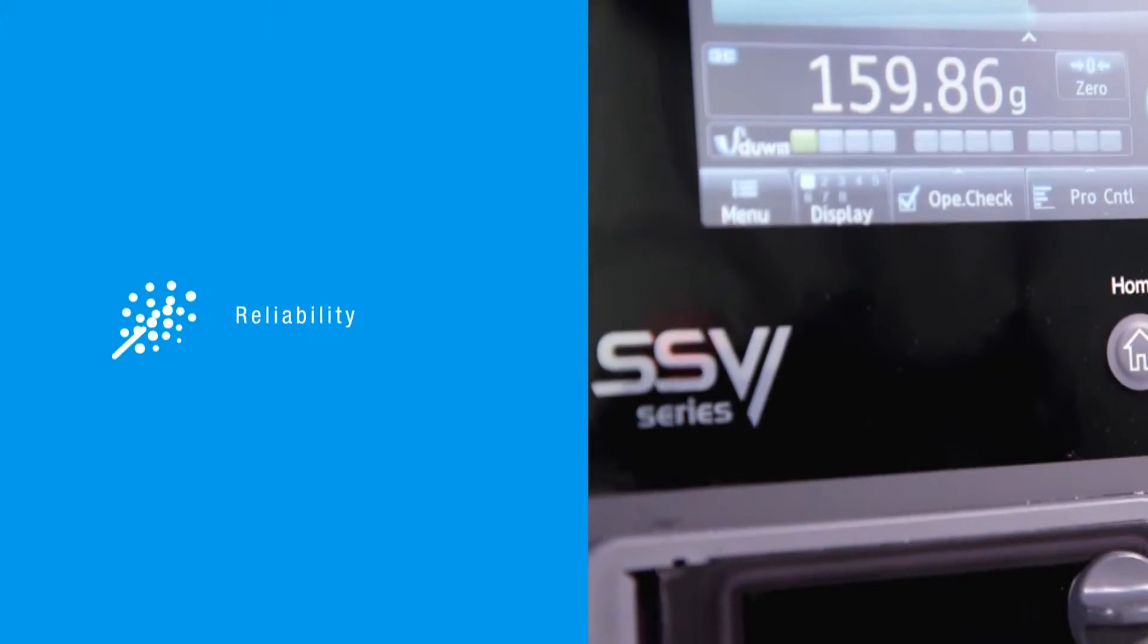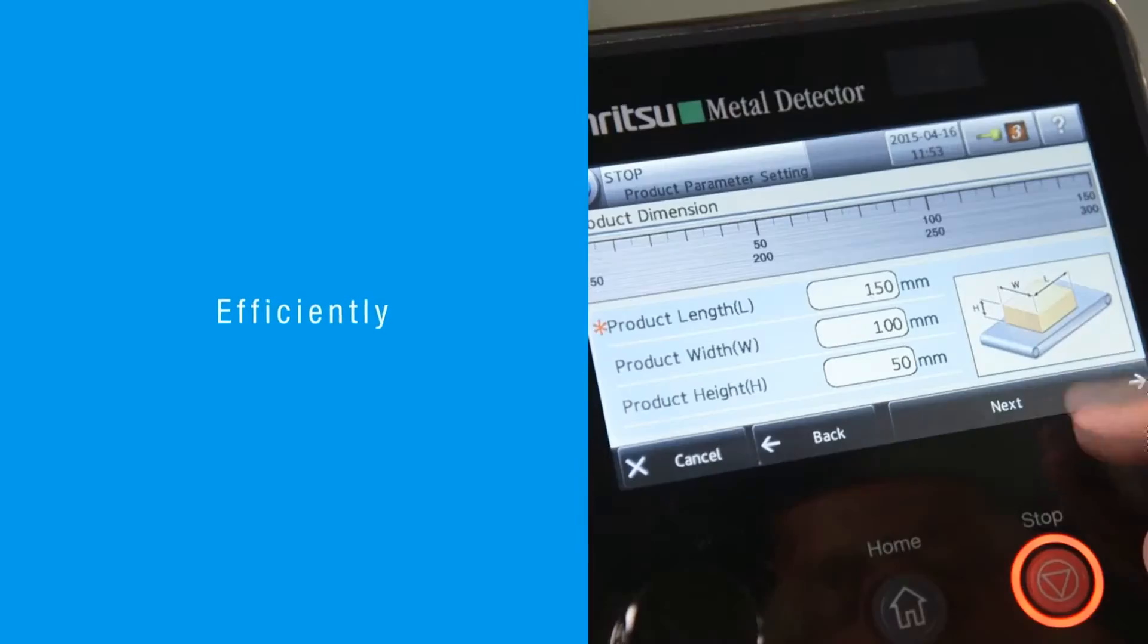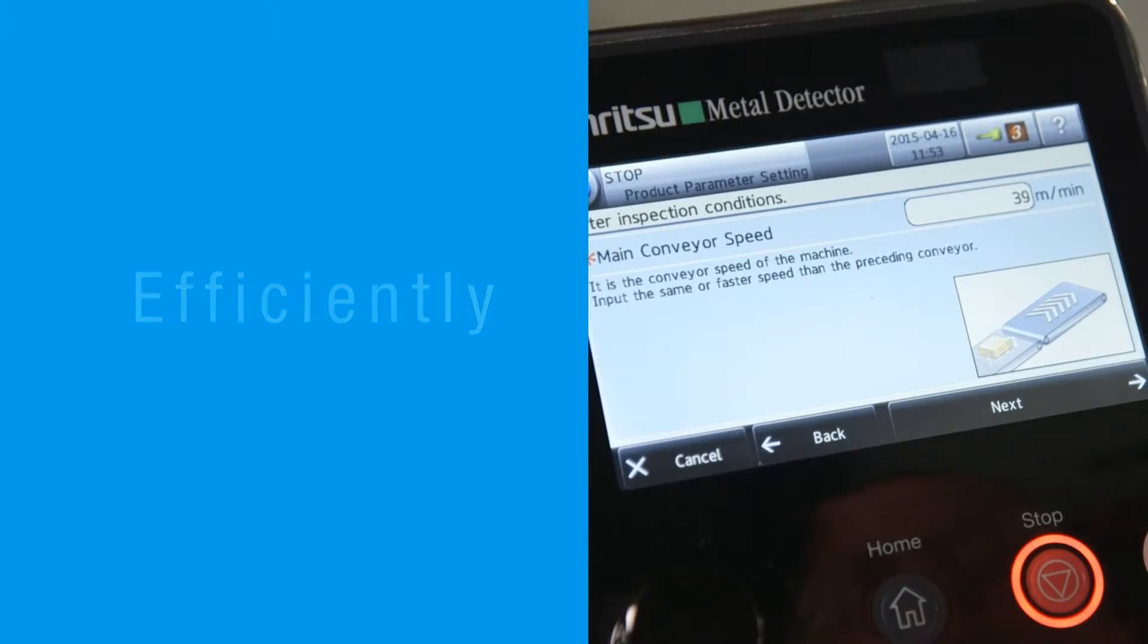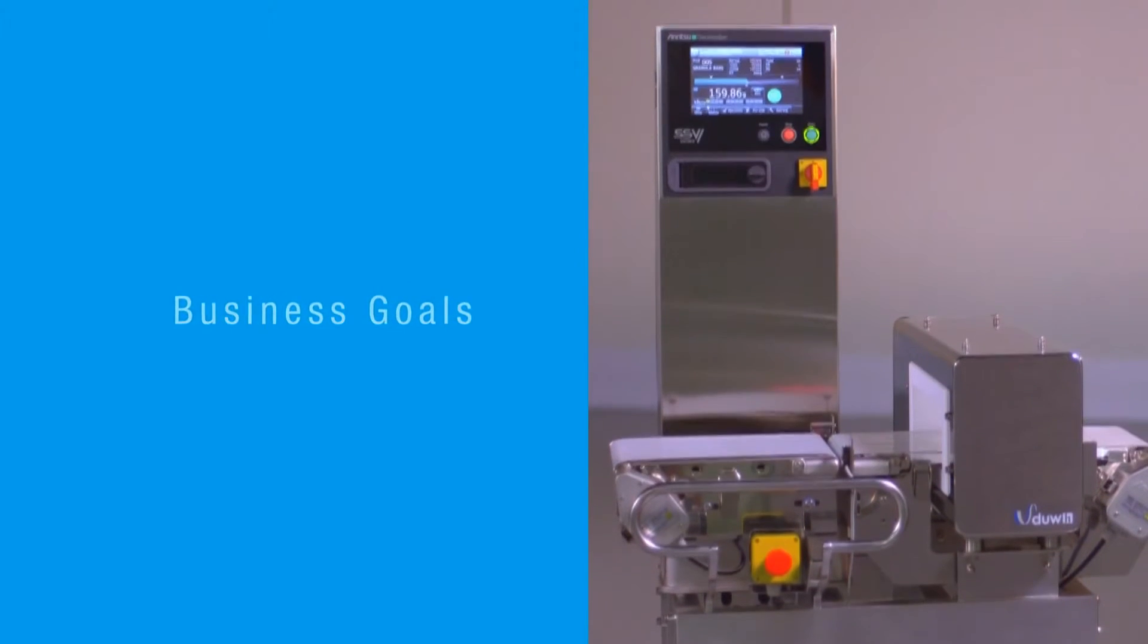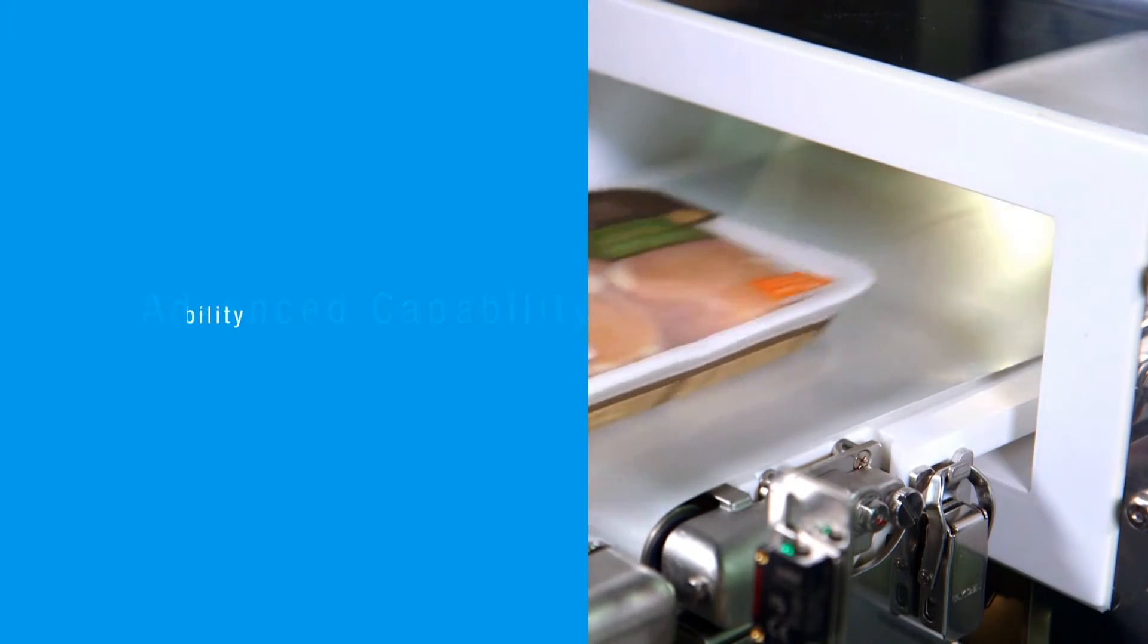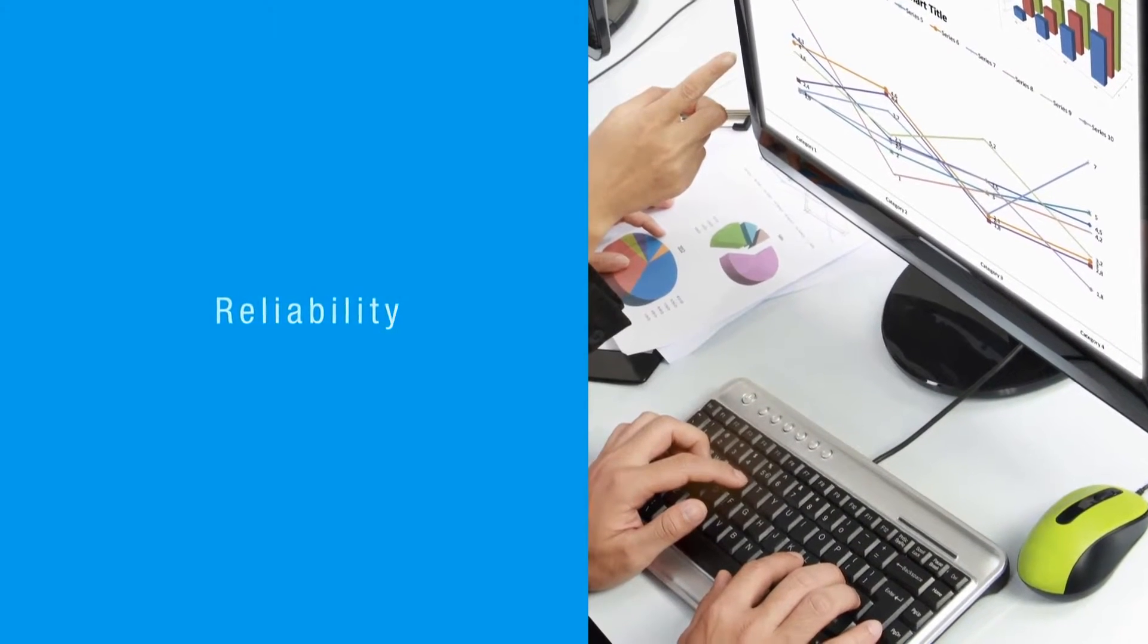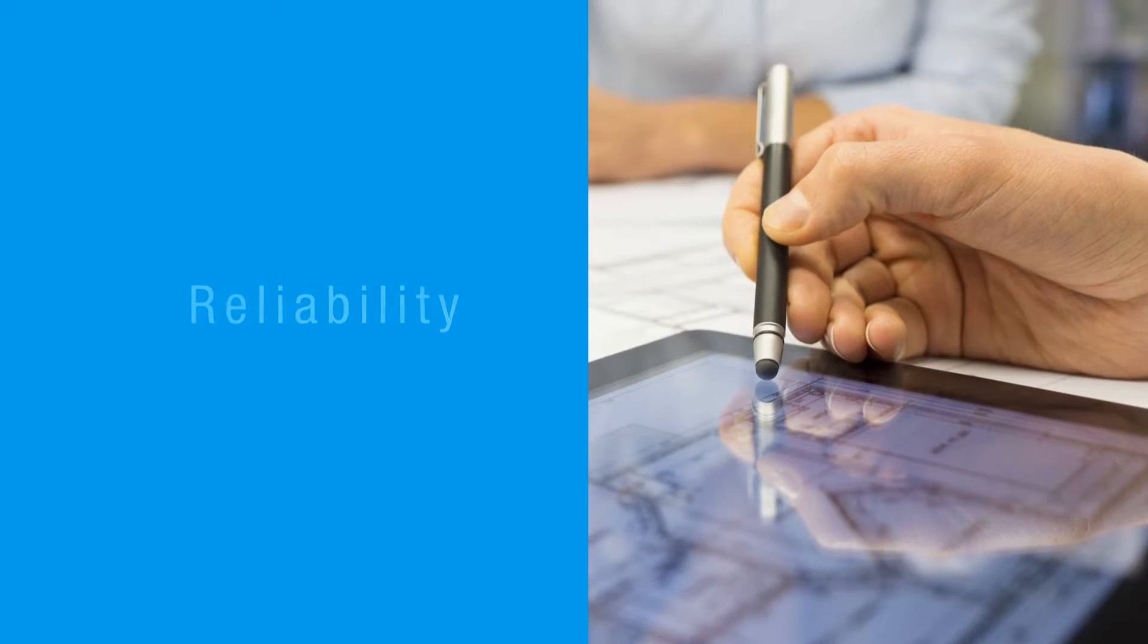High stability and reliable performance are critical to keep your poultry line running efficiently. Anritsu metal detection in poultry products adapts to your business's goals. Moreover, integrating our combination system with advanced capability and reliability to increase your efficiency and meet your OEE goals.